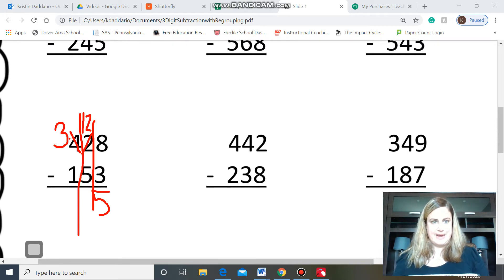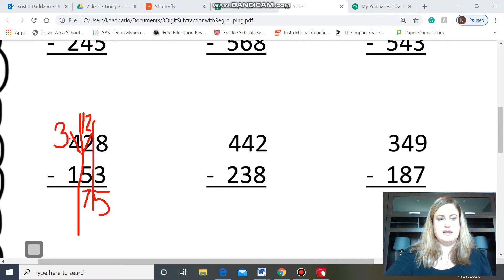The ones place is completely done. I'm now in the tens place. I can do twelve, take away five. If I use my number line here, I can start at twelve and jump back five. One, two, three, four, five. So, I have seven in the tens place, and then I go to the hundreds place, and I have more on top. So, three minus one is two. So, my answer is 275.